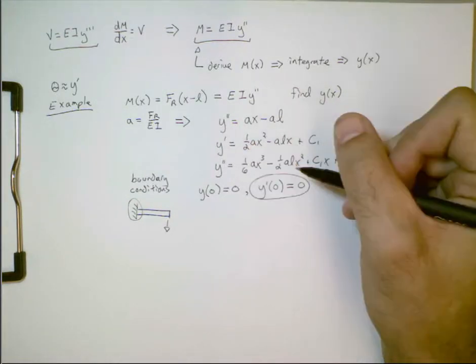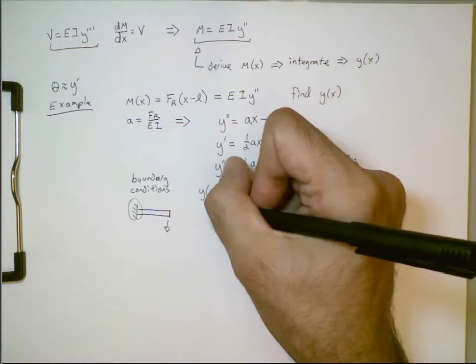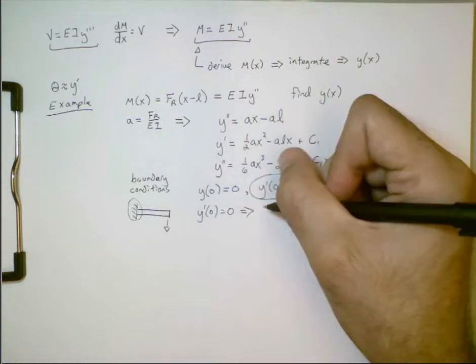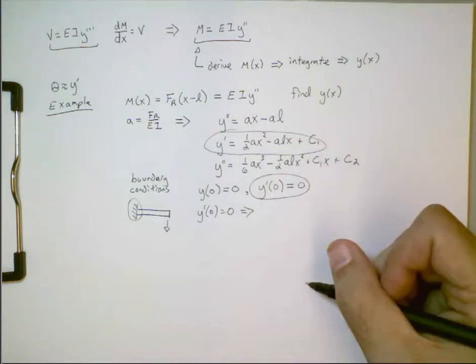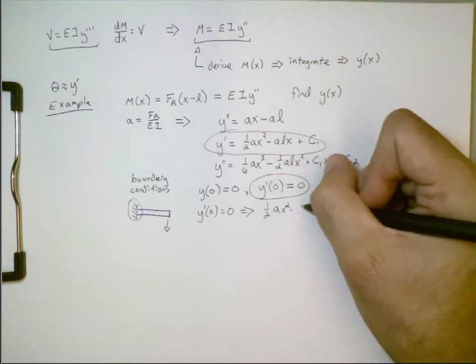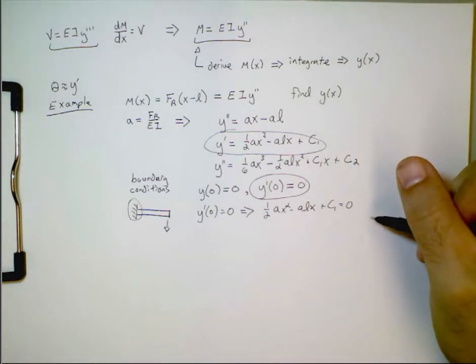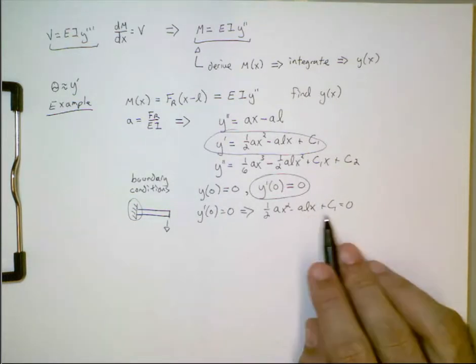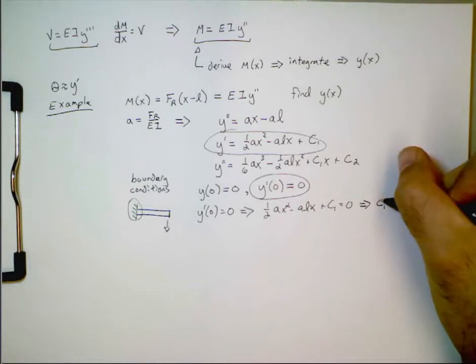So, let's use a second boundary condition first. And, if we plug these values in. So, y prime of zero equals zero. And, we look at this equation up here. Here, then, we end up with this. We have one half ax squared minus alx plus c1 equals zero. Well, if we plug in x equals zero here and here, then we're just left with c1 is equal to zero.